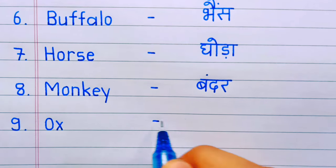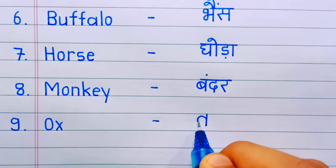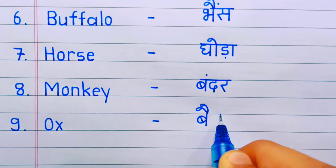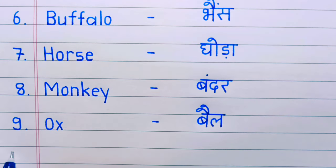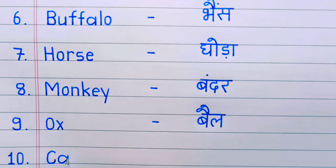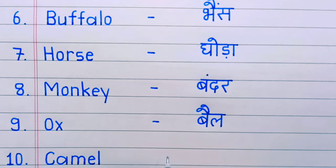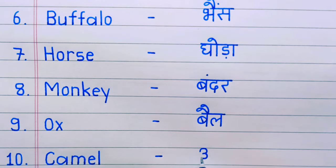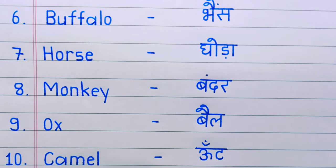Number nine: ox. Ox means bail. And last, number ten: camel. Camel means unt.